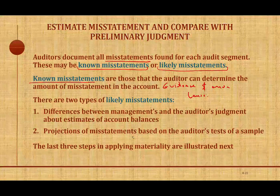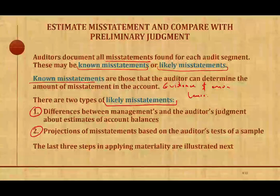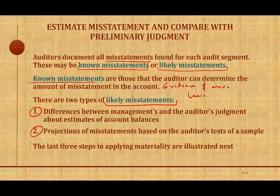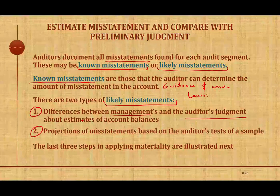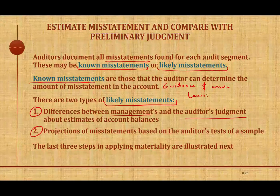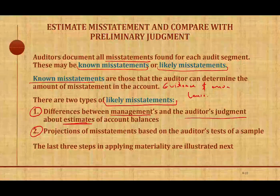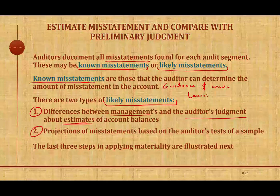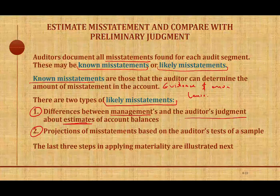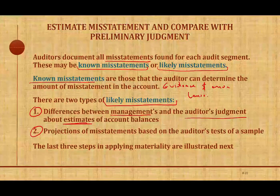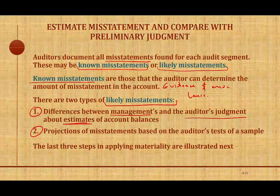Then we have another type called likely misstatements, which we break down into two types. The first type is the differences — the differences between management's and the auditor's judgment about estimates of account balances. Certain balances on the balance sheet, such as warranty liability among many others, are subject to estimates. Management made an estimate, and we could question this estimate — we may disagree. Maybe management estimated too much warranty or too little. Also, allowance for bad debt related to accounts receivable — management may have overestimated or underestimated that allowance. So that's a likely misstatement.